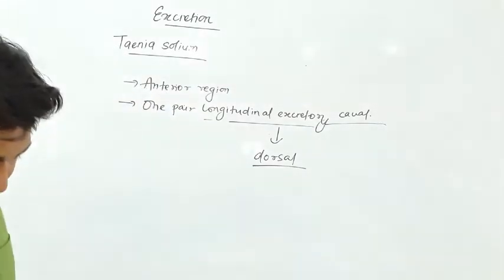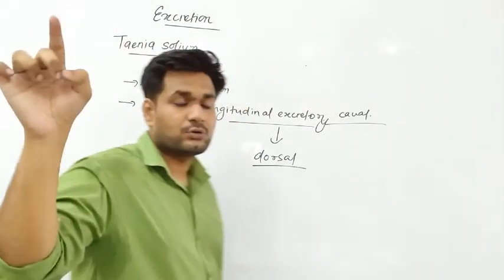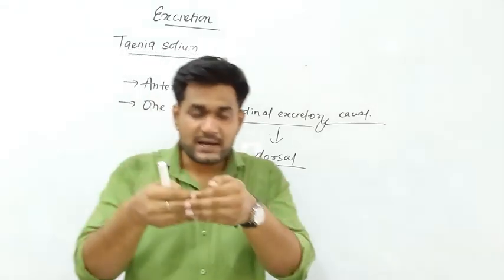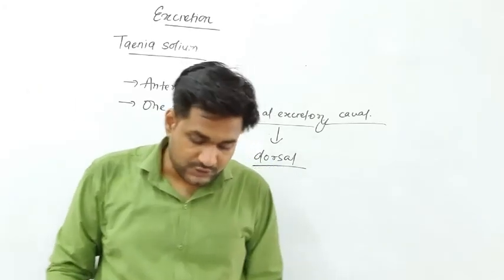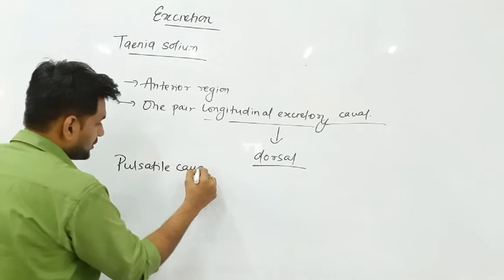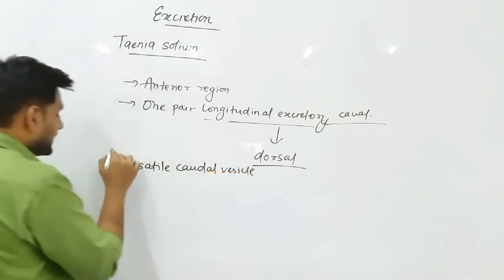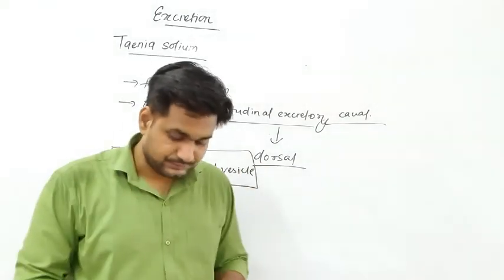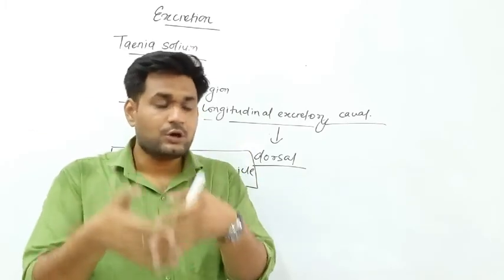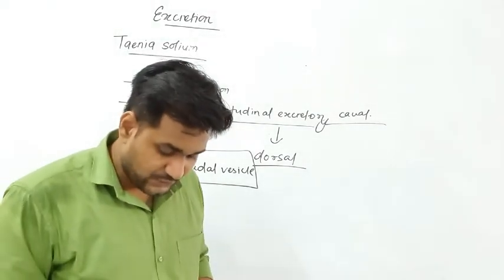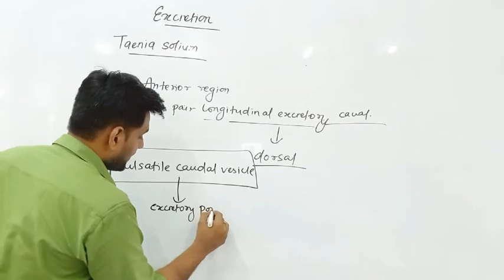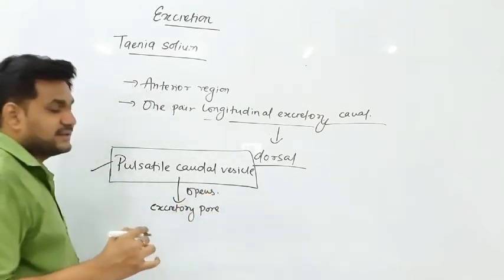The ventral vessel runs throughout the entire body. The dorsal vessels are in the first part of a segment, and the ventral vessels run to the last proglottid. Both the ventral vessels join together and form a structure called the Pulsatile Bladder Vesicle — also called the ventral tube or ventral canal.